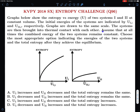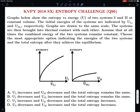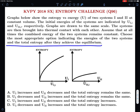The systems are then brought into thermal contact with each other. Assume that at all times the combined energy of the two systems remains constant — there's no energy loss to the surroundings. These two systems are just brought in thermal contact. We must choose the most appropriate option indicating the energies of the two systems and the total entropy after they achieve equilibrium.